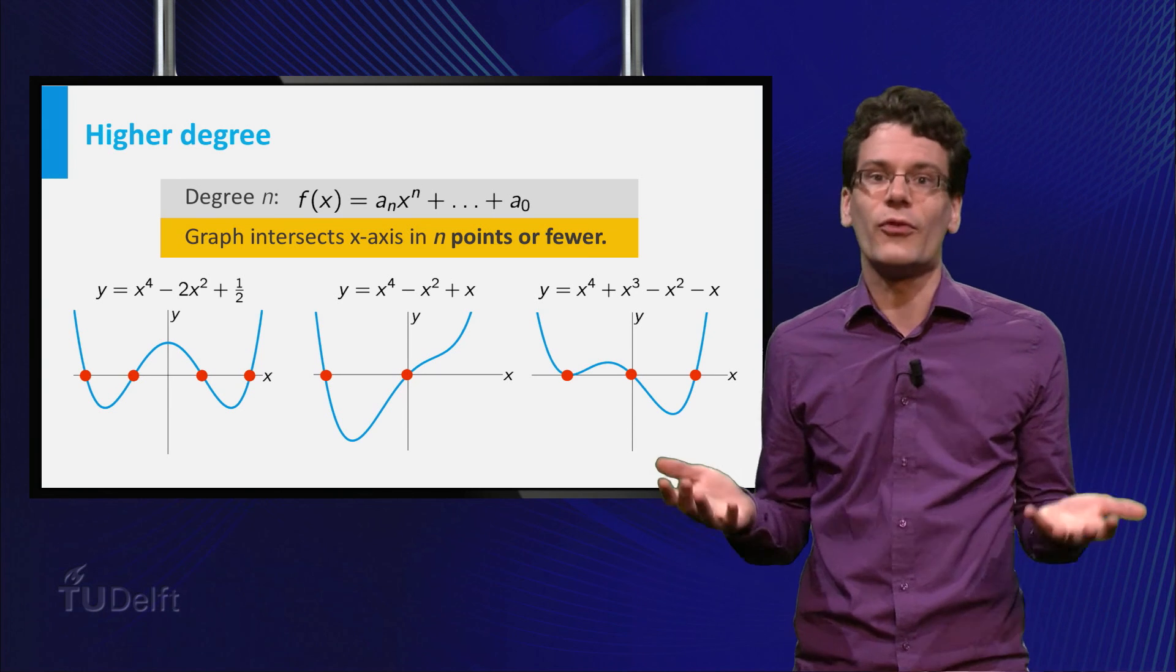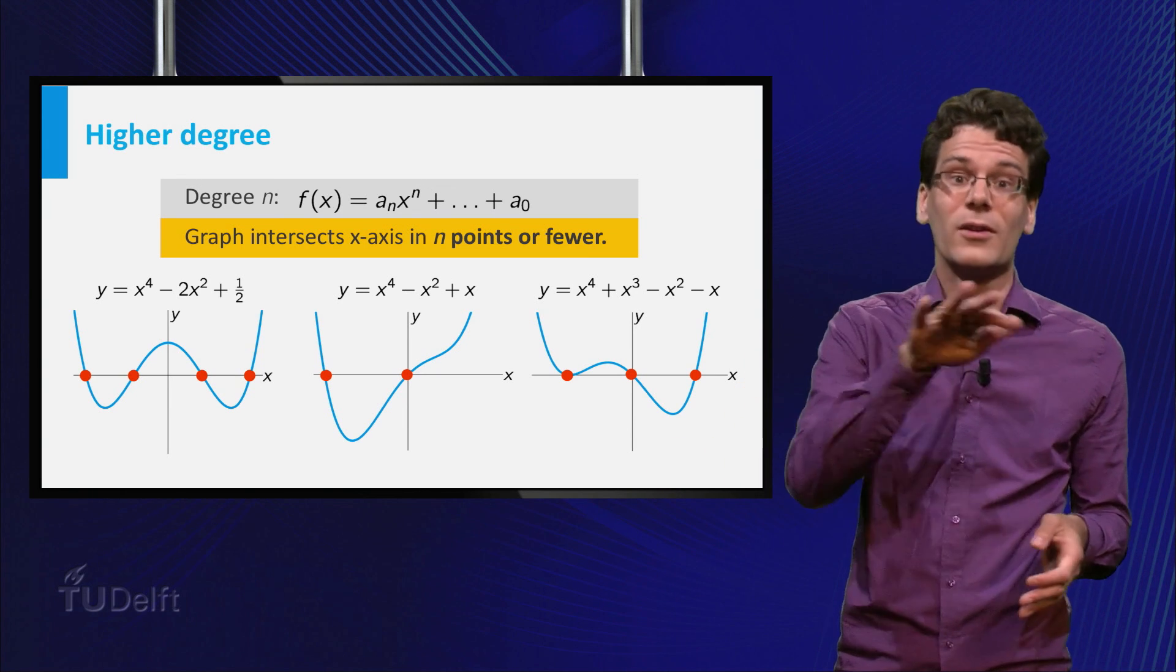Intuitively, you can think of it as follows. The higher the degree, the more wobbly the graph may look.